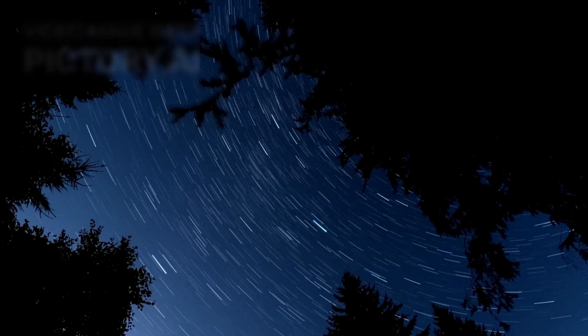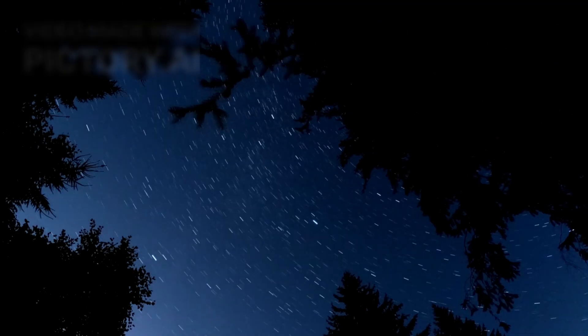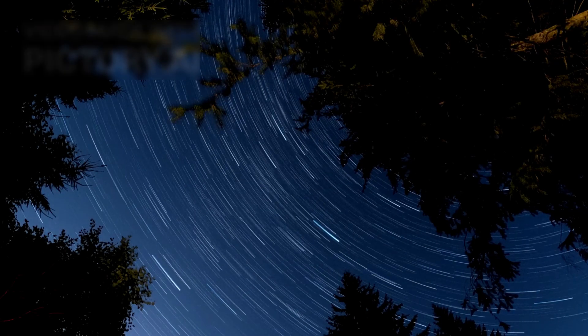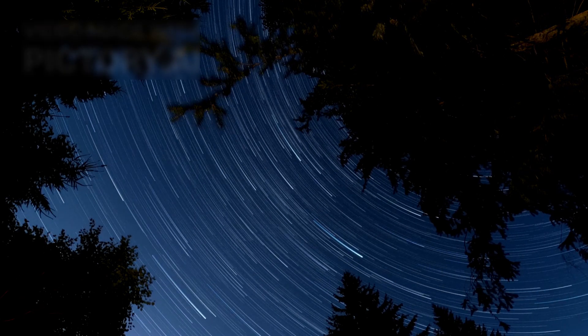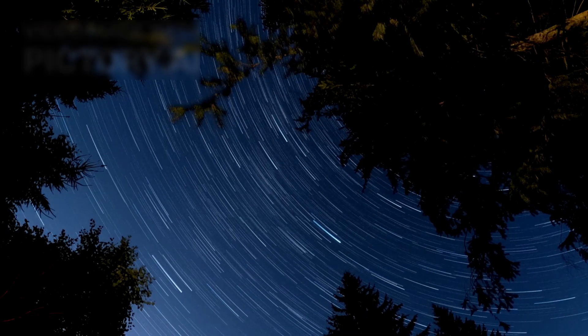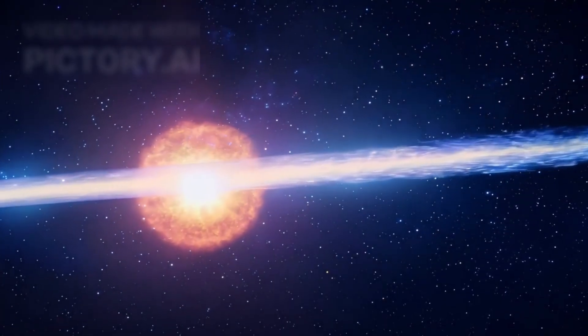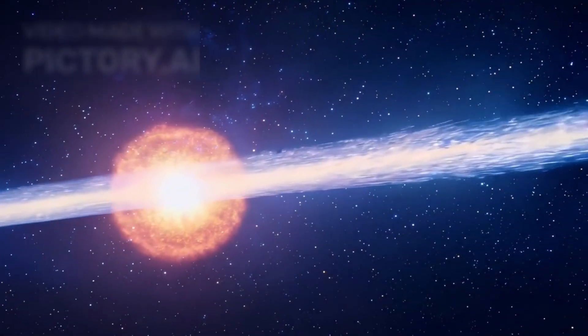We are seeing real-time indicators of a collapsing star: massive convective bubbles rising and bursting on its surface, magnetic fields warping under unimaginable strain, and plumes of gas streaming into space at speeds that defy comprehension. For the first time in human history, we are watching the anatomy of a supernova unfold in real time.